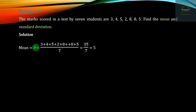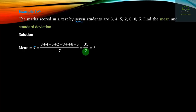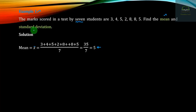The next step is to find the highest score relative to the average score. We need to find the number of students that have the highest score. The first step is to find the difference between the values, and the second step is to compute the standard deviation.